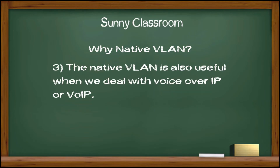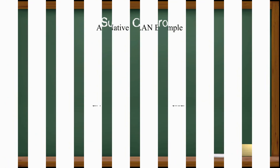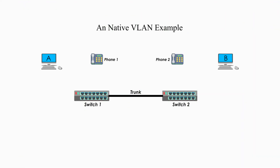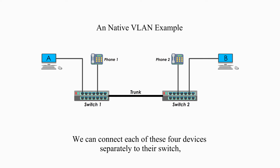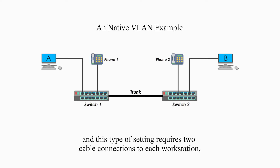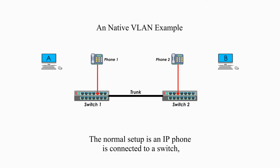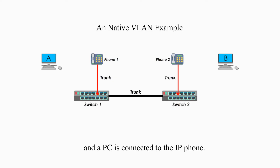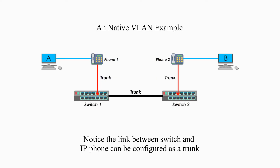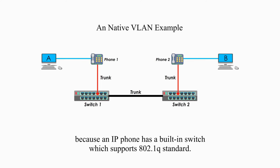Third, the native VLAN is also useful when dealing with Voice over IP, or VoIP. Here we have two IP phones and two computers. We can connect each of these four devices separately to the switch, but this requires two cable connections to each workstation, which is wasteful. The normal setup is for the IP phone to be connected to the switch, and the PC connected to the IP phone. The link between the switch and IP phone can be configured as a trunk because the IP phone has a built-in switch that supports the 802.1Q standard.